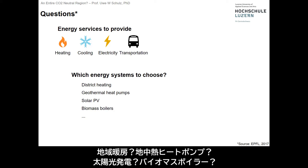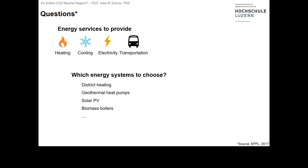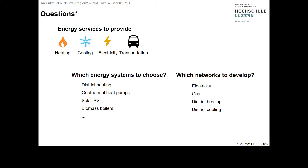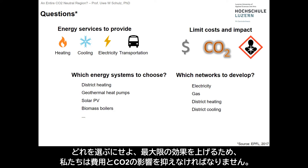A district heating? A geothermal heat pump? Solar PV? Biomass boilers? Which network should we be developing for electricity, for gas, for district heating, for district cooling? Whatever we choose, we need to limit the cost and the CO2 impact to have a maximum effect.